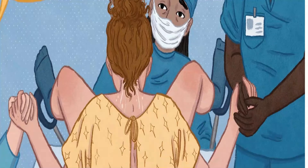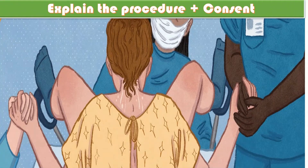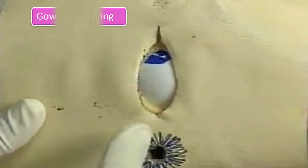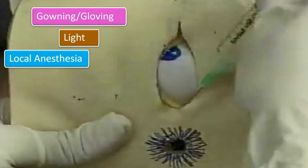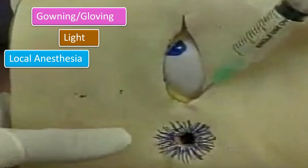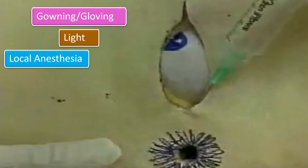For the procedure of episiotomy, I will explain the whole procedure to the couple, inform them of its needs and risks, and take informed consent. After gowning and gloving, and in the presence of adequate light and anesthesia — which may be local infiltration or regional anesthesia — I will check for pain perception and clean the area with antiseptic solution.